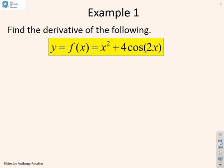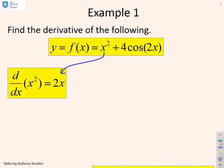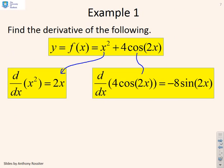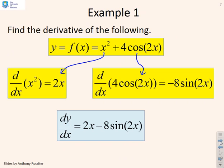So here's an example. Find the derivative of the following. All you do is first differentiate the x squared term, then you differentiate the 4cos(2x) term, and then you simply add the two results together.